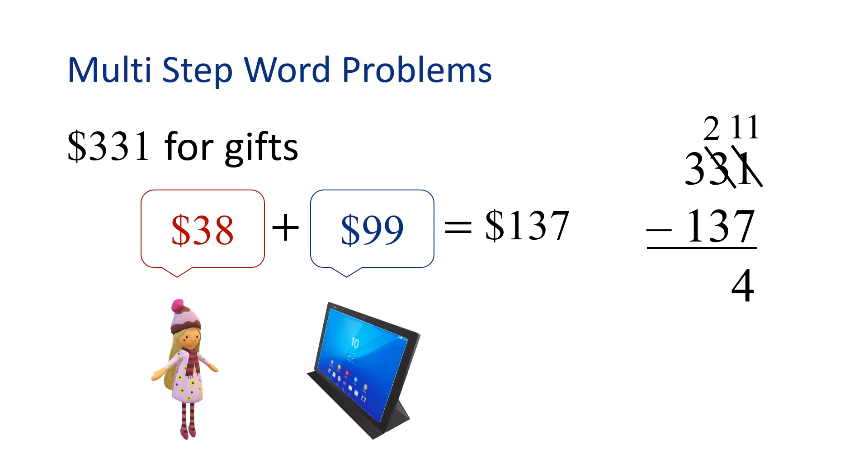Okay. Now we repeat the process in the tens column. We have 2 minus 3. I can't take away 3 from 2, so we have to borrow again, this time from the hundreds column. Cross out the 3 and write a 2. And now we will show our borrowing by crossing out the 2 and writing 12. Now let's subtract. 12 minus 3 is 9. Great job. We're almost done. Now we need to subtract in the hundreds column. 2 minus 1 is 1. We found that 331 minus 137 is 194. Therefore, Lily has $194 left after she bought the doll and tablet.